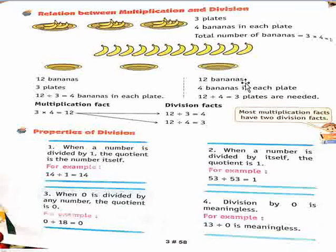You can see 12 bananas. We have 4 bananas in each plate. So 12 divided by 4 equals 3. So 3 plates are needed.